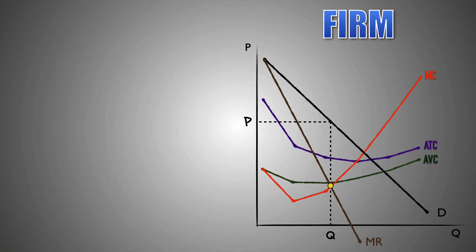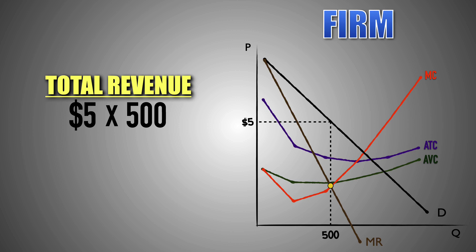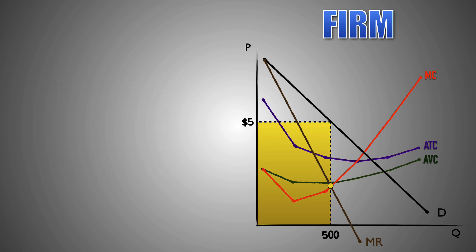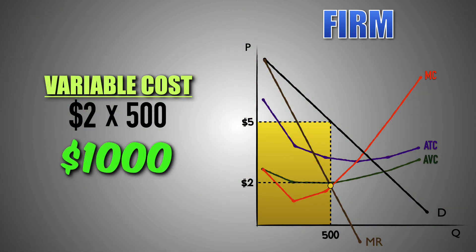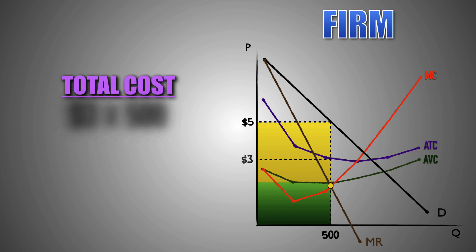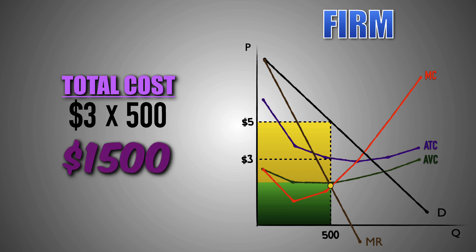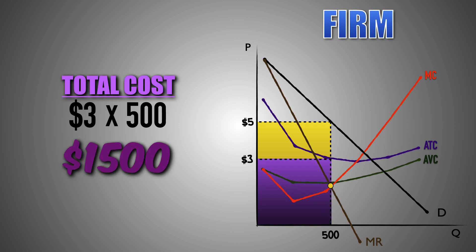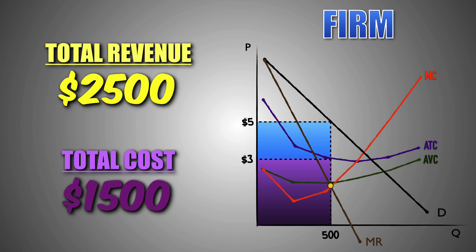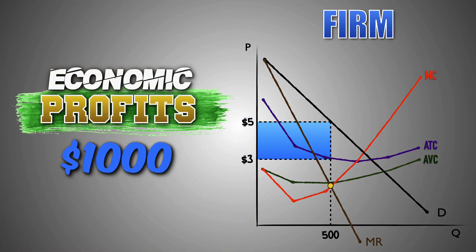Using the graph, we can also calculate the revenue, costs, profits, and losses for this imperfectly competitive firm. Let's assume that the firm will produce 500 units of Good M, and the market price for Good M is $5. The firm will earn $5 of revenue per unit of Good M, and will earn a total revenue of $2,500. If the firm faces an average variable cost of $2 per unit, the firm will face a total variable cost of $1,000. And if the firm faces an average total cost of $3 per unit, the firm will face a total cost of $1,500. With $2,500 in total revenue, the firm will be able to pay the $1,500 in total production costs and still have a net revenue of $1,000. This net revenue represents $1,000 in economic profits for the firm.